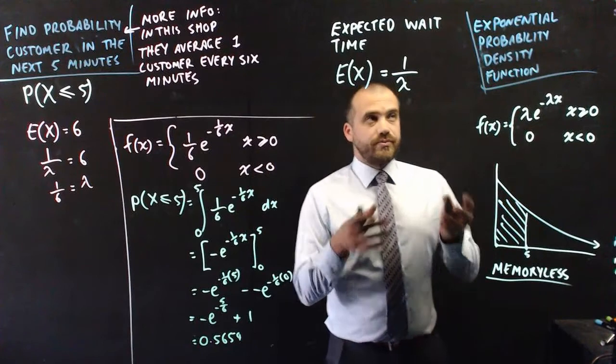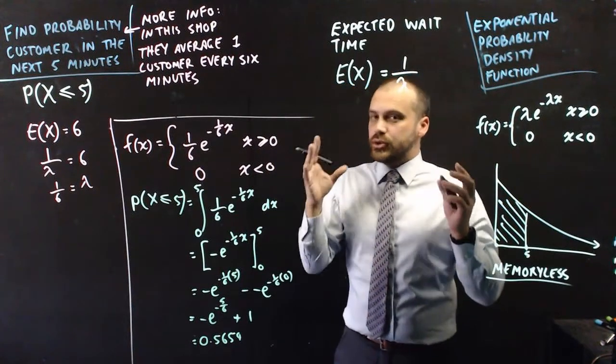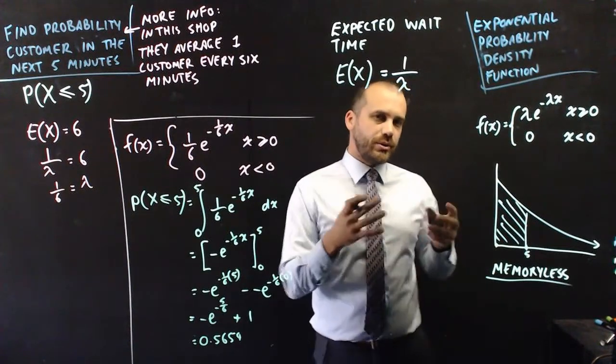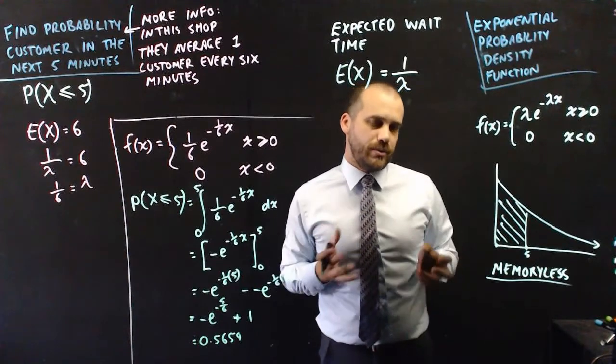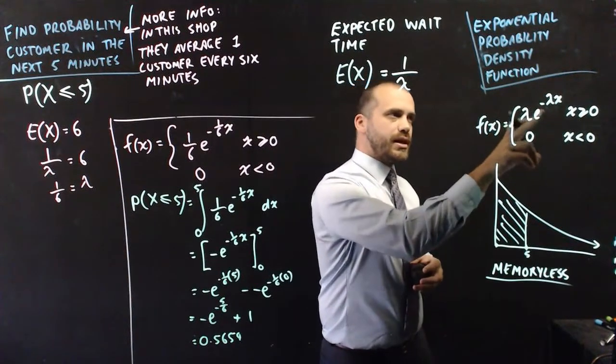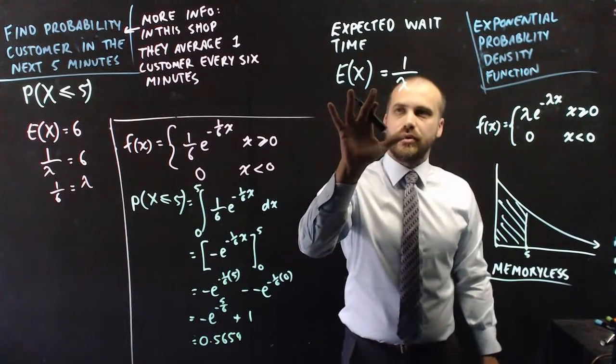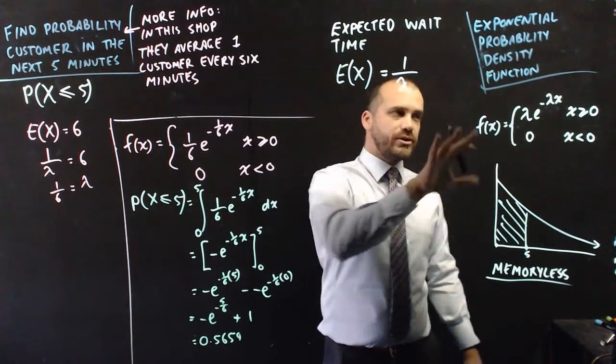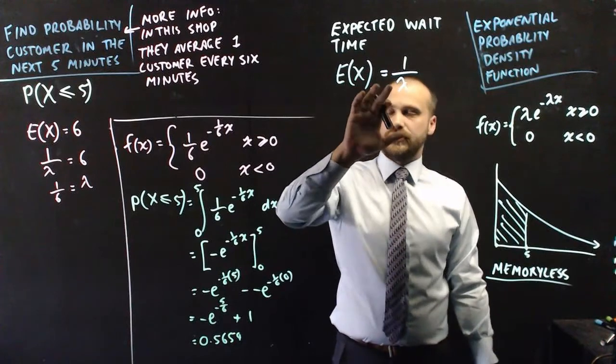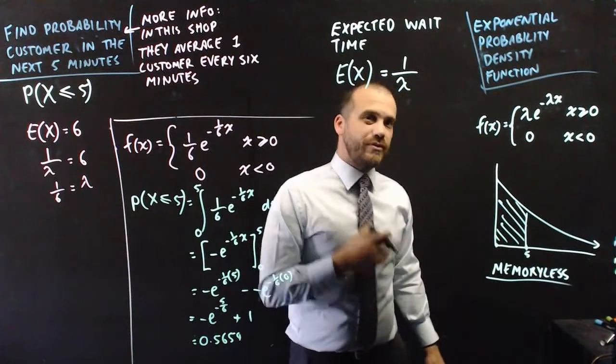So what are you supposed to take away from this video? There is a thing called an exponential probability density function and it is good for these waiting problems. How long will I have to wait? What is the probability that I will have to wait a certain amount of time for something to happen? This is the function lambda e negative lambda x. Now, it has this particular property. The expected value of this is equal to one over lambda. So if you know what your expected wait time is, what your average wait time is, you can find lambda very easily.